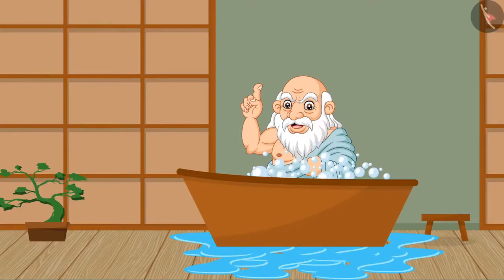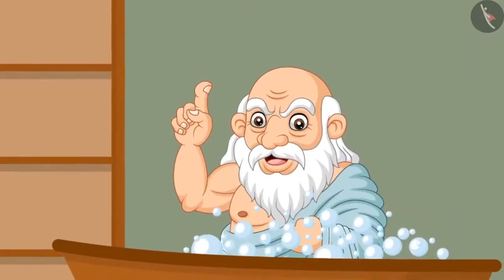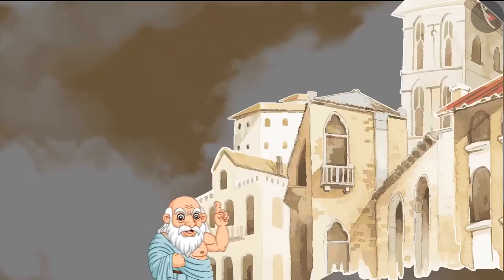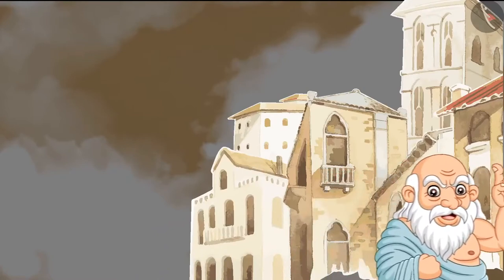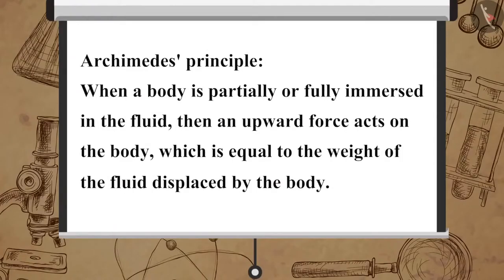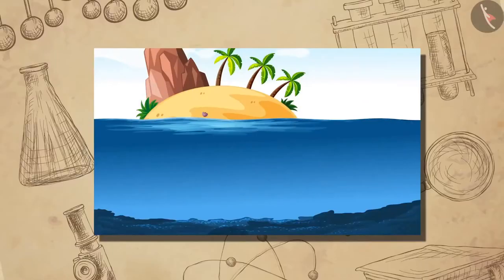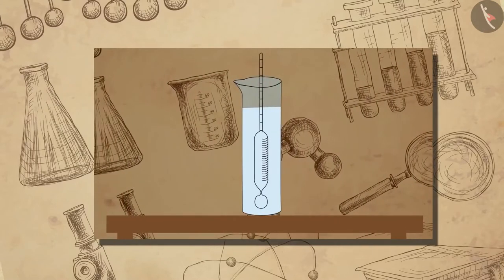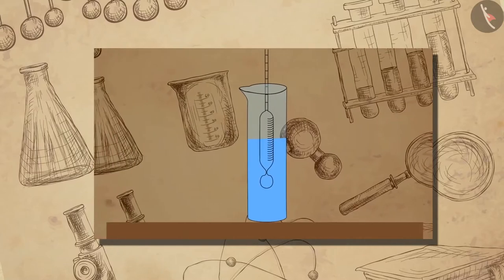Archimedes found out the answer when he noticed that the water in a bathtub overflowed when he stepped into it. He shouted 'Eureka! Eureka!' — meaning 'I have got it!' — as he ran through the streets. The Archimedes principle states that when a body is partially or fully immersed in a fluid, an upward force acts on the body which is equal to the weight of the fluid displaced by the body. This principle is applied in designing ships and submarines, in lactometers to determine the purity of milk, and in hydrometers to determine the density of liquids.